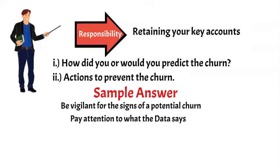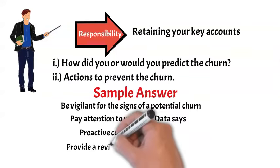This particular client had a reputation for consistent engagement, but there was a halt in the introduction of new products and reduced replenishment of old ones. To address this challenge, I conducted a thorough analysis of the client's data, including sales figures, product performance, and customer interactions. This data-driven approach allowed me to identify a clear decline in their product visibility on our platform, which was enabling competitors to gain a foothold. This analysis clearly suggested their dissatisfaction, so I initiated a discussion with them and inquired if they were considering switching to a competitor. Since I knew where the problem was, I suggested a revitalization plan.